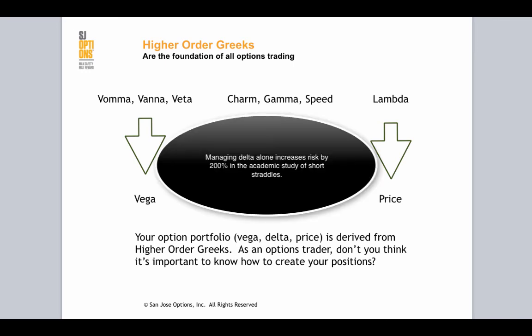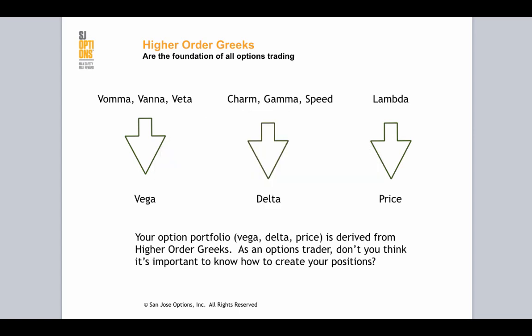Again, you're just managing or treating a symptom, but you're not actually going to the root or the foundation of where that delta is created — or your Vega. And so you have a serious disadvantage because you're going to get pushed around by the market.